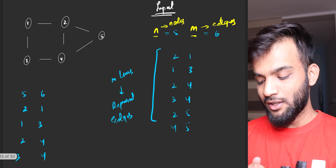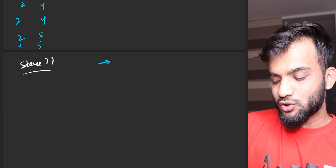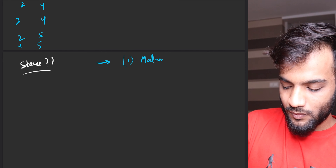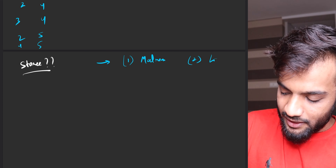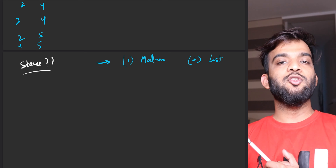Now the question is: how do we store the graph? There are two ways — one is the matrix way and the second is the list way. The first way is to use a matrix, which we generally call an adjacency matrix.